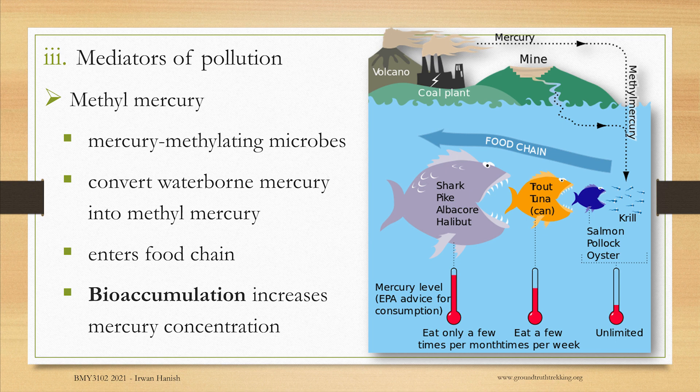The third role played by microorganisms is as mediators of pollution. The microbes themselves are not the pollution, but they mediate and produce it. For example, microorganisms like Geobacter species methylate mercury — meaning they add a CH3 or methyl group to the mercury — and that forms methylmercury, which enters the food chain.